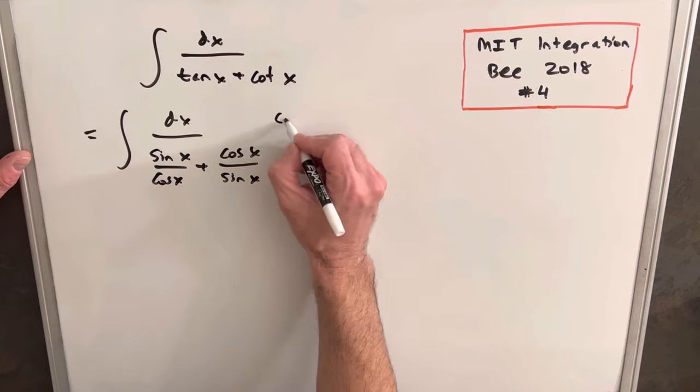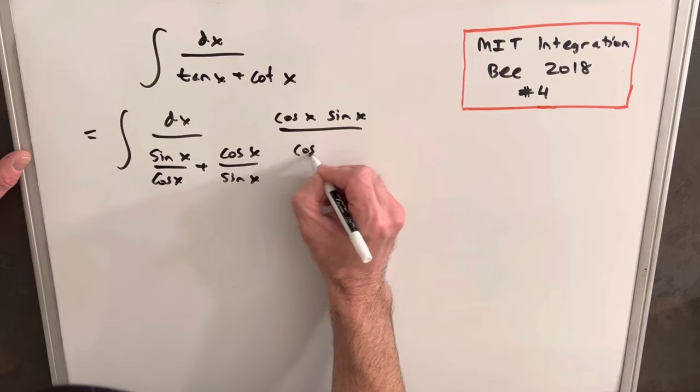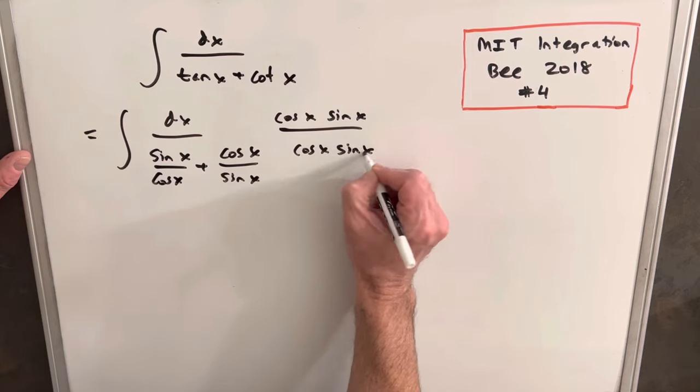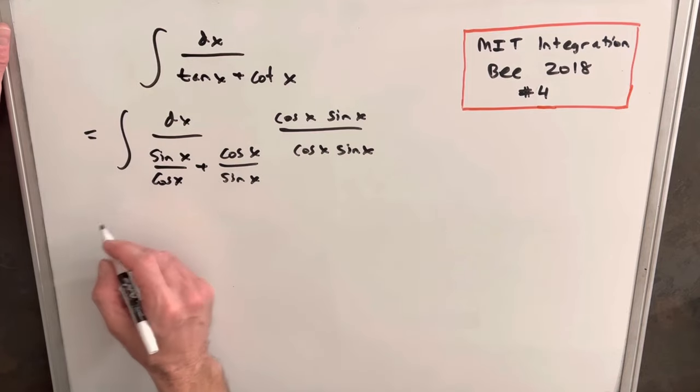so we can multiply, what can we do? We can multiply the top and bottom by cosine x sine x, and then what's going to happen there, we're going to have some nice cancellation, so let's just rewrite this now.